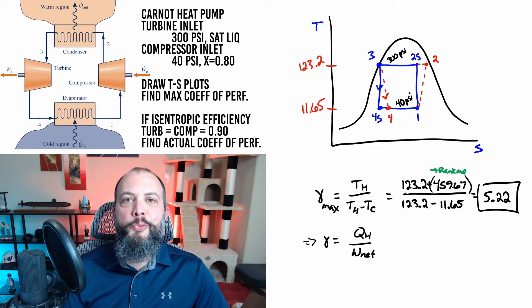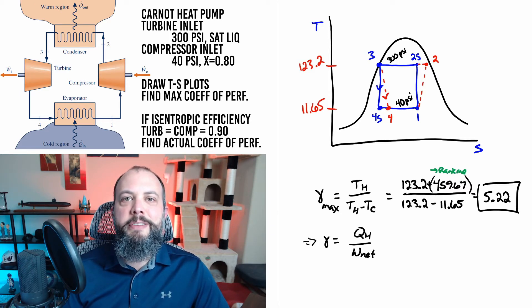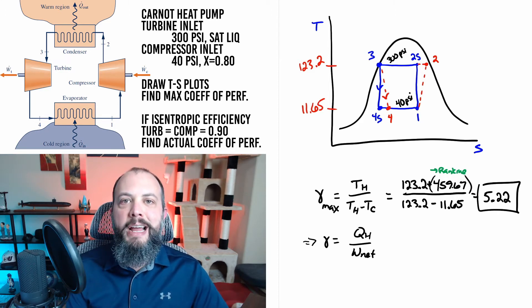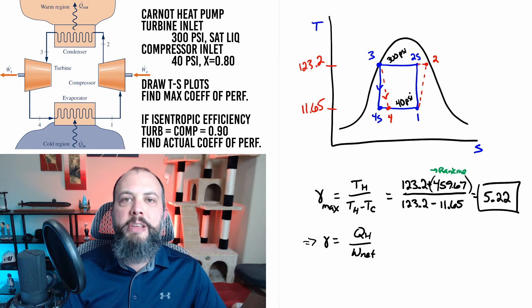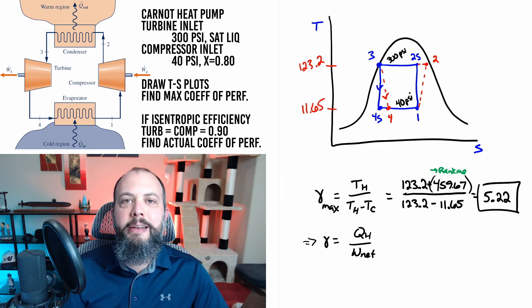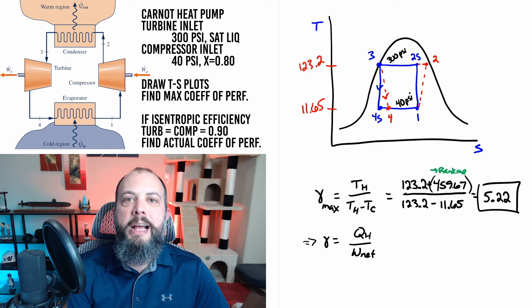Now it may seem at a glance that I broke my own rule with the denominator because I left those in Fahrenheit but a change in temperature actually can stay Fahrenheit or Celsius because one degree Fahrenheit is the same size as one degree Rankin. So the change in temperature can stay as Fahrenheit or Celsius.